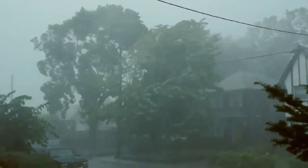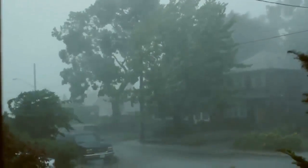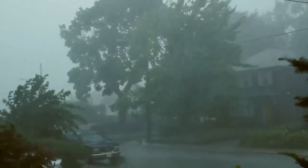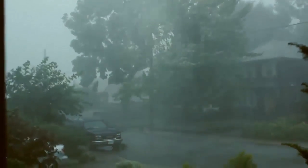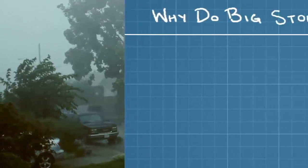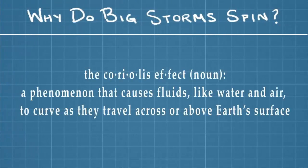Why do storms spin in different directions depending on their location? And why do they spin in the first place? A storm's rotation is due to something called the Coriolis effect, which is a phenomenon that causes fluids like water and air to curve as they travel across or above Earth's surface.